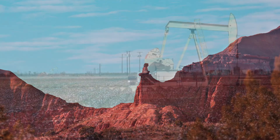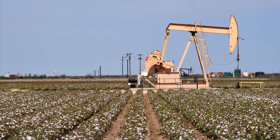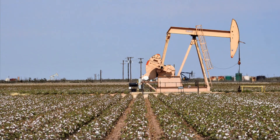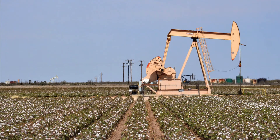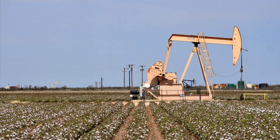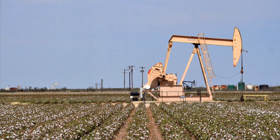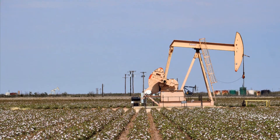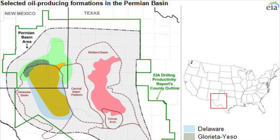Just below the High Plains are the North and South Plains. In the North Plains, you see an area of oil, farming, and cattle ranching around Amarillo. In the South Plains, you have the Lubbock area, which is dominated by cotton. At the bottom of the South Plains is the Permian Basin oil field, one of the largest and most productive oil fields in the world.